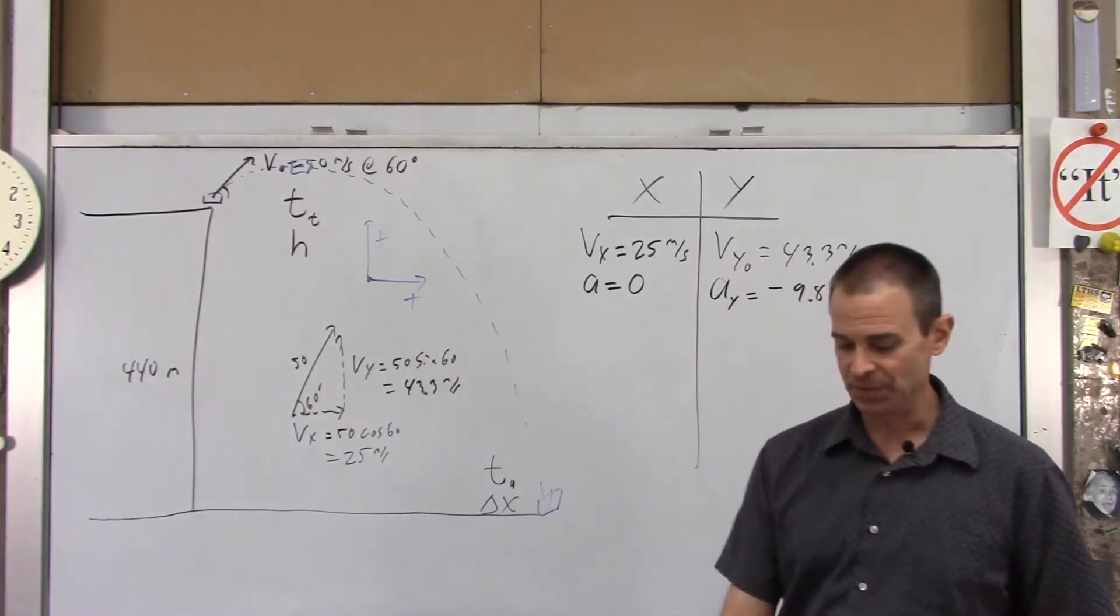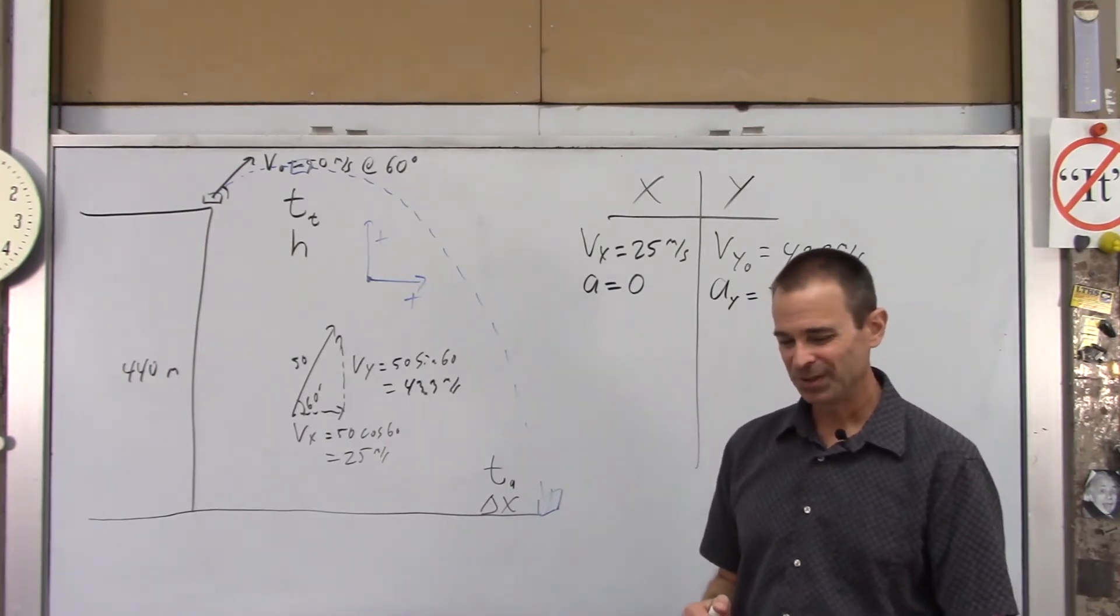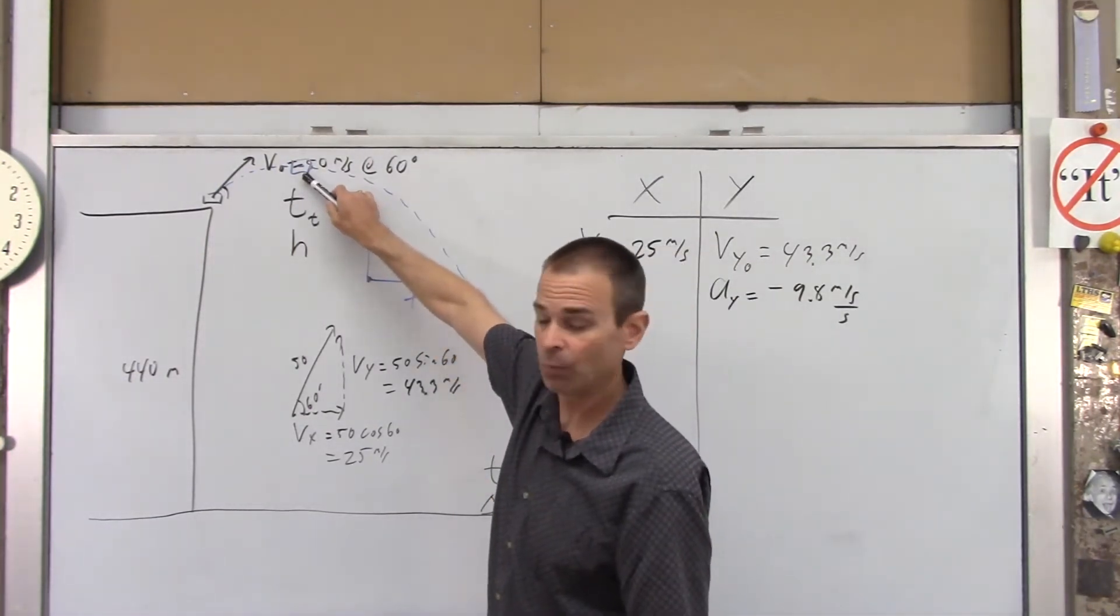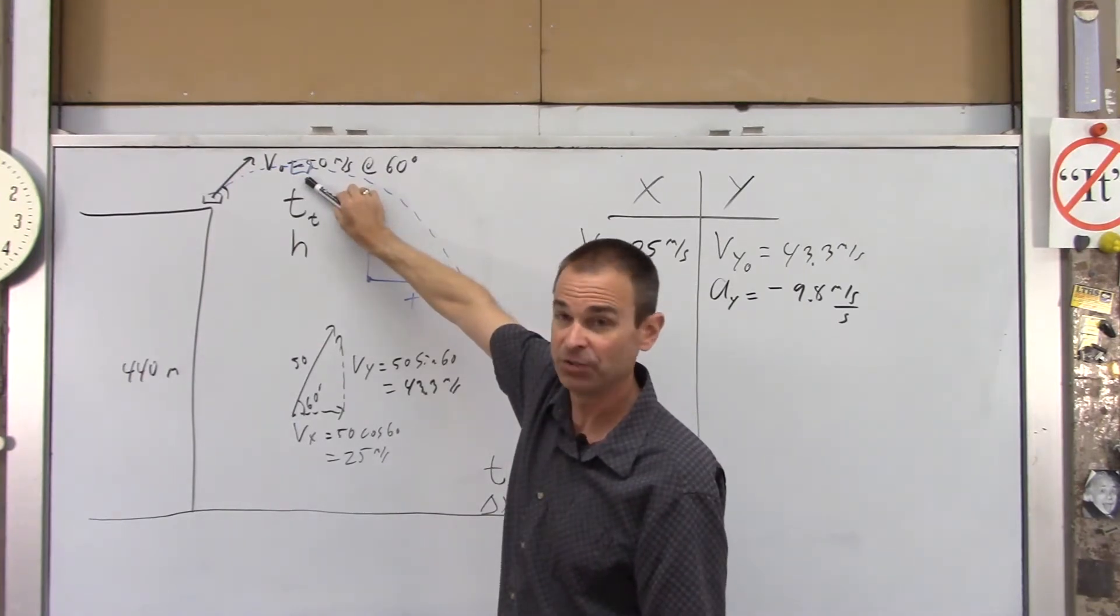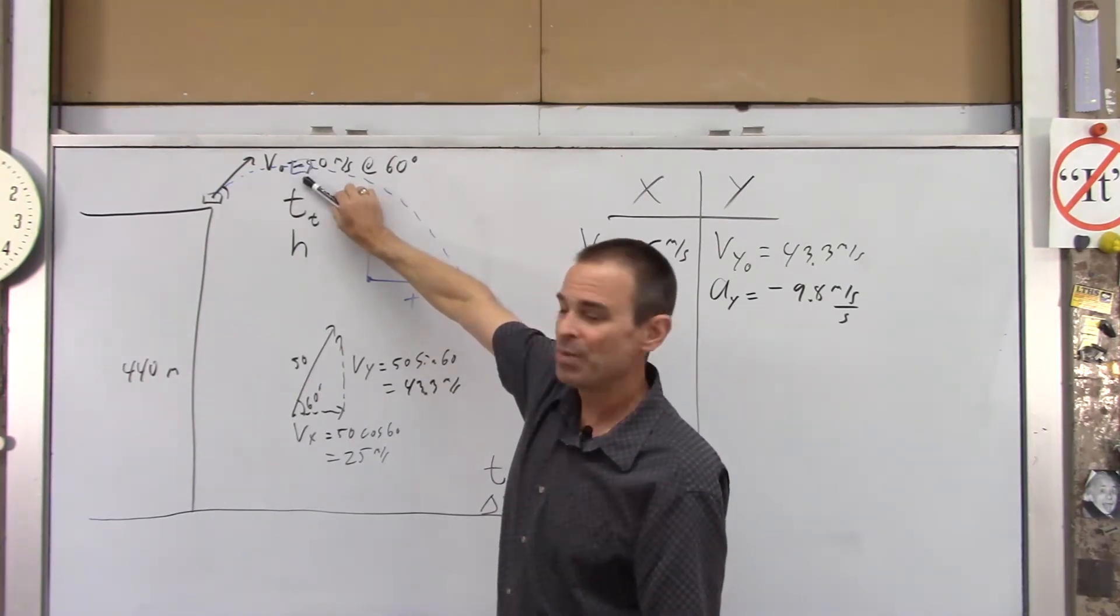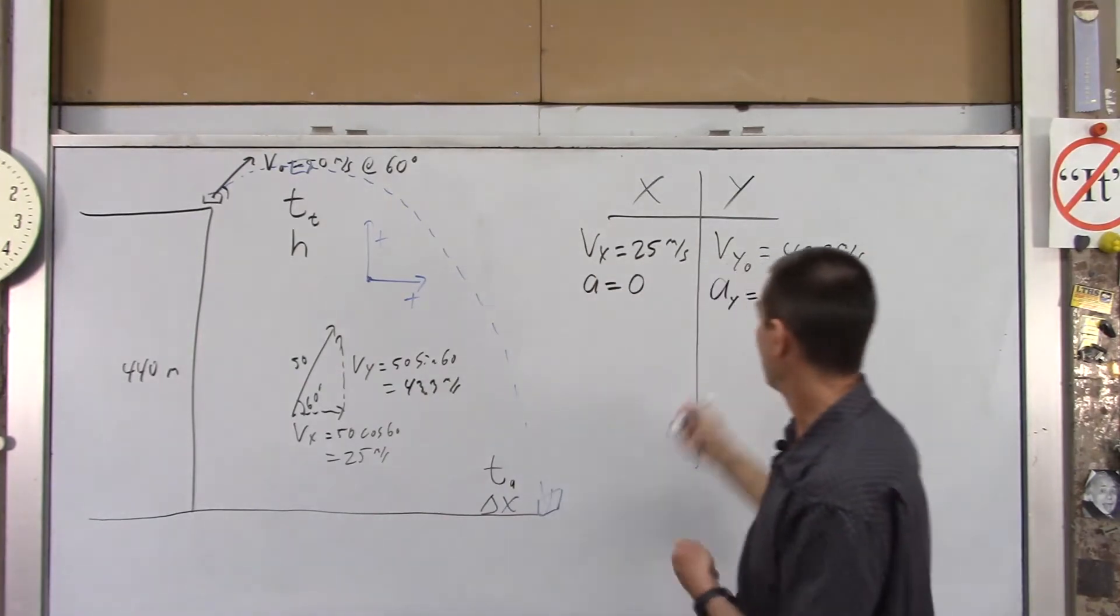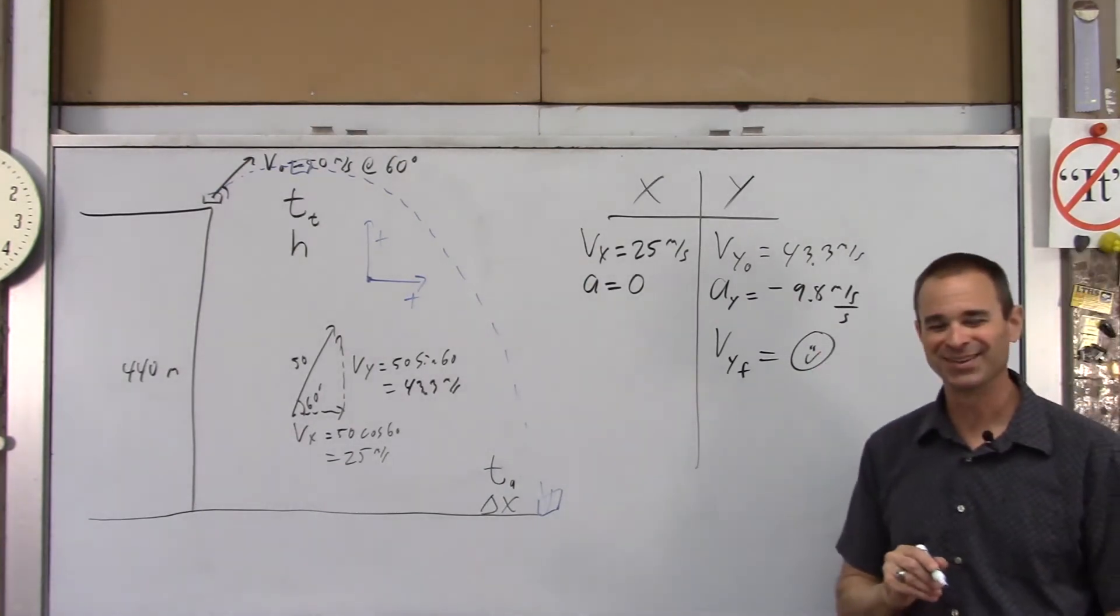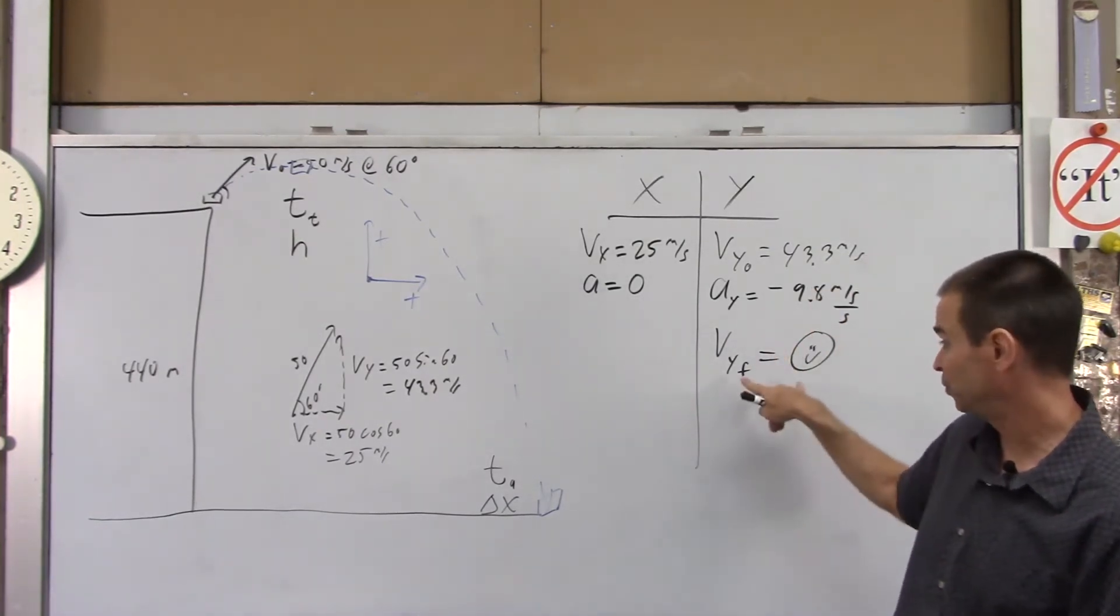Now, there's one more given in this problem that's a really important given to write down. At the end of the path, we're looking at when that book reaches the top of its path, the top of that parabola. There is something we know about its motion at that moment. At that moment, it's only moving horizontally. It's going only to the right. It's not moving up or down. So VY final is zero meters per second. Once you know that, the rest of this is really simple. So the hardest part of this problem is writing down the givens, and especially that one.